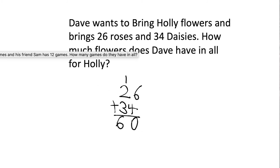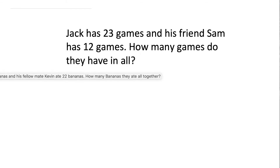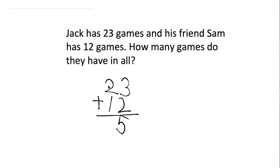Now we go to the third one. Jack has 23 games and his friend Sam has 12 games. How many games do they have? So we have to add 23 games plus 12 games. 3 plus 2 is 5, and 2 plus 1 is 3. The answer is 35 games.